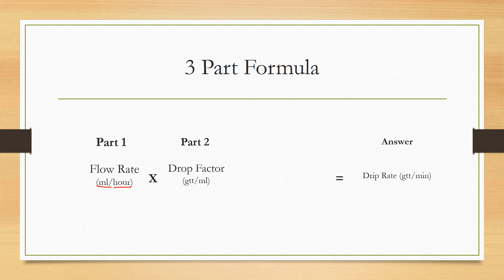So the second part of this formula is going to be the drop factor. This is also going to vary. It's going to vary depending on the type of tubing you're using. So just as we discussed in the previous slide, the units for this is going to be drips per milliliter. So how many drips it takes to get one milliliter.